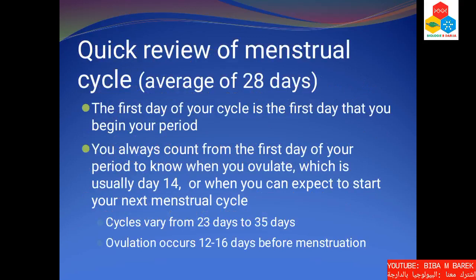Quick review of the menstrual cycle: the average cycle is 28 days. The first day of your cycle is the first day that you begin your period. You will always count from the first day of your period to know when you ovulate, which is usually day 14, or to predict when you can expect your next menstrual cycle. Cycles vary from 23 to 35 days, and ovulation occurs 12 to 16 days before menstruation.